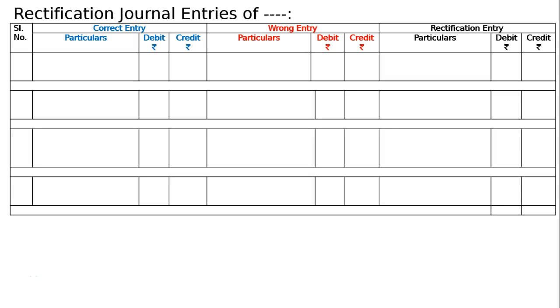The question is to give journal entries to rectify the following errors. The format will have serial number, correct entry, wrong entry, and rectifying entry.